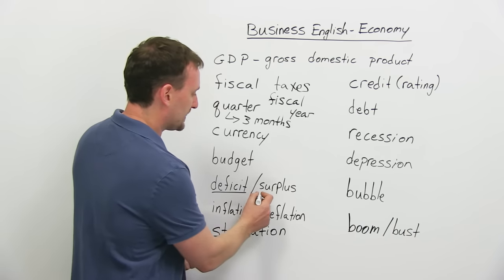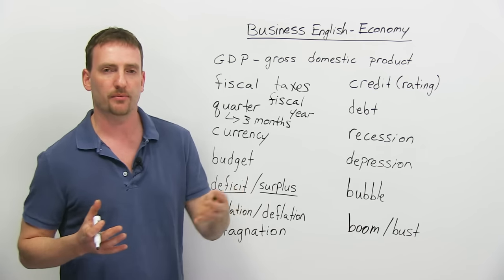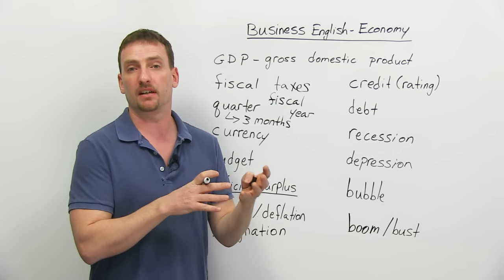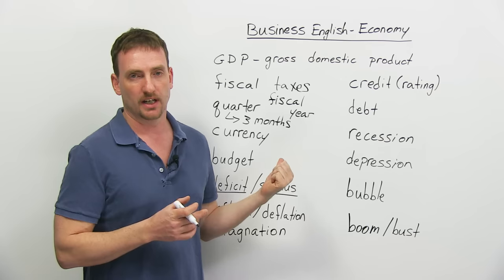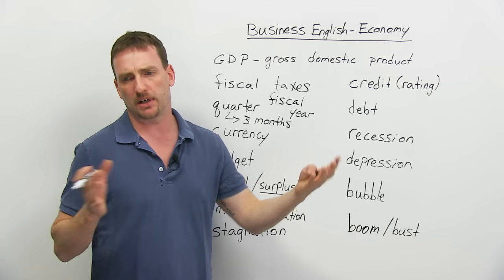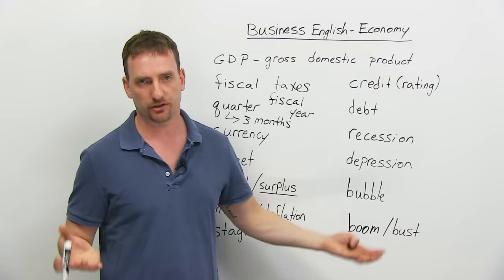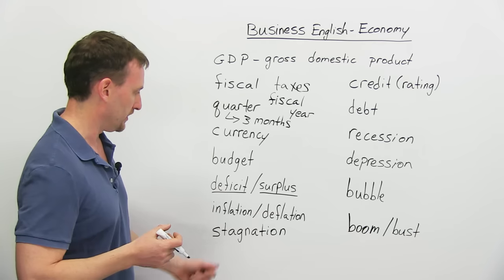Surplus is the opposite. Surplus is when the government or any company, you don't have to apply this to a government, when you have more money than you need for the budget. So if I need to spend a million dollars over the next year, but I have a million and a half, then I have half a million dollar surplus, which is always a good thing.